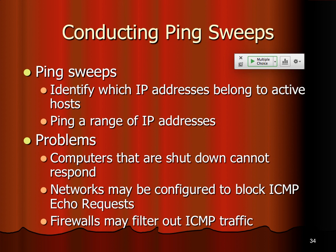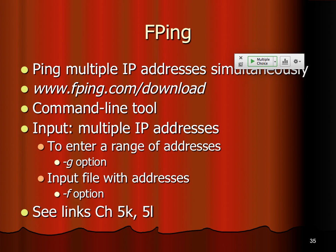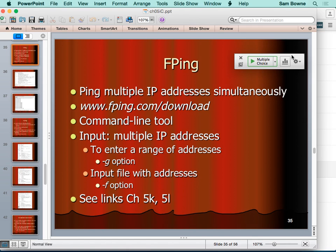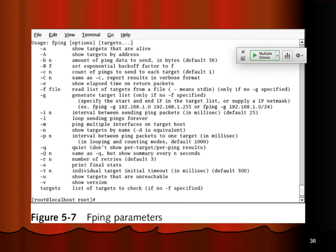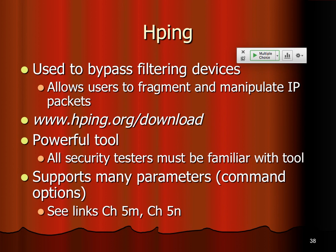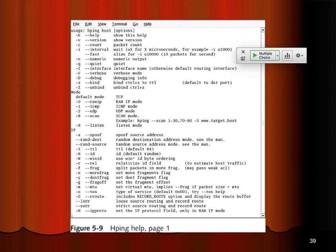There are ping suites where you just ping a whole range of IP addresses to find something. The problem is firewalls might block the replies, and the Windows default firewall blocks replies, so this is a lot less useful than it used to be. But there are various tools designed for this kind of scanning. fping is a command line tool with many options to send different kinds of ping sweeps, and hping does it with many of those options as well.